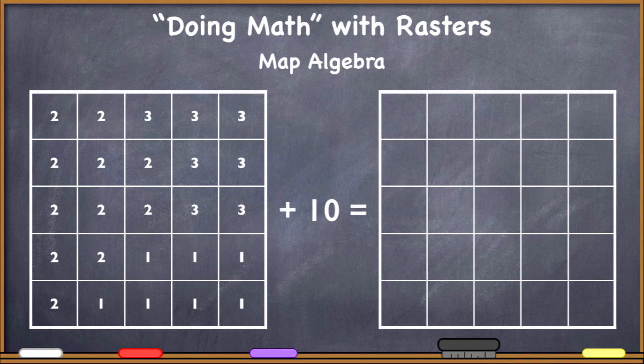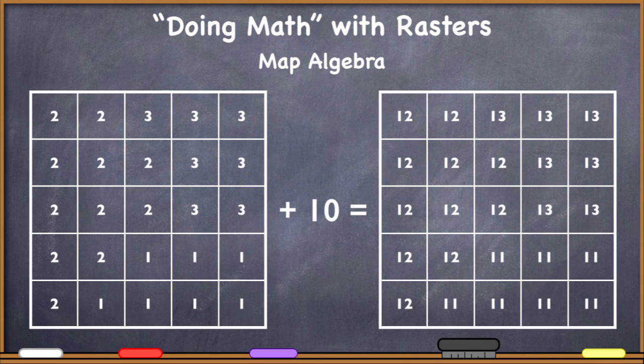If I want to add 10, well, no problem. The same story. I'm going through here and I'm taking the input value. I'm adding 10 to it and then I'm putting the sum into the cell that it comes from and having these geo-positioned.